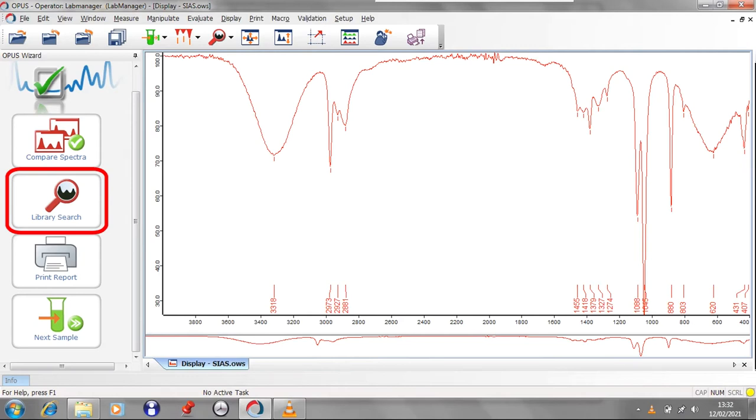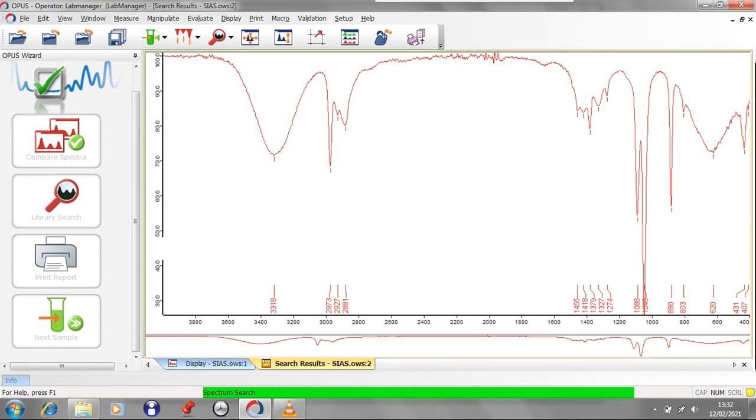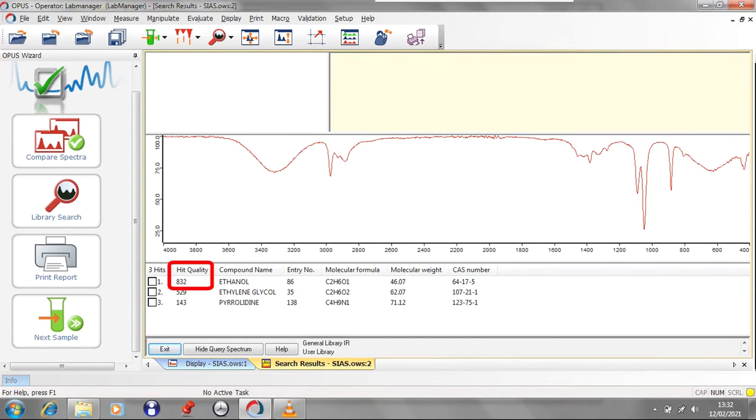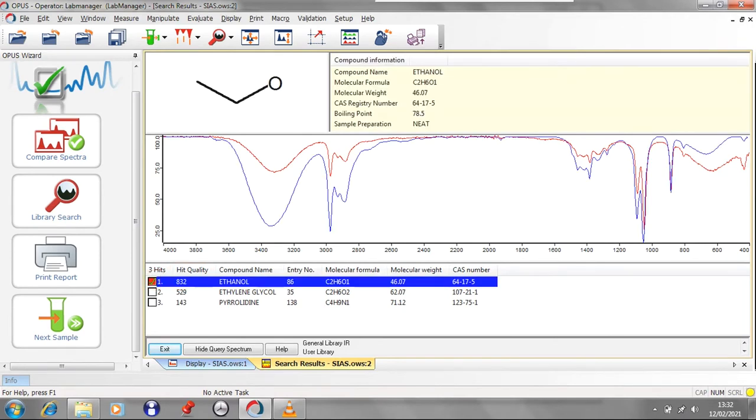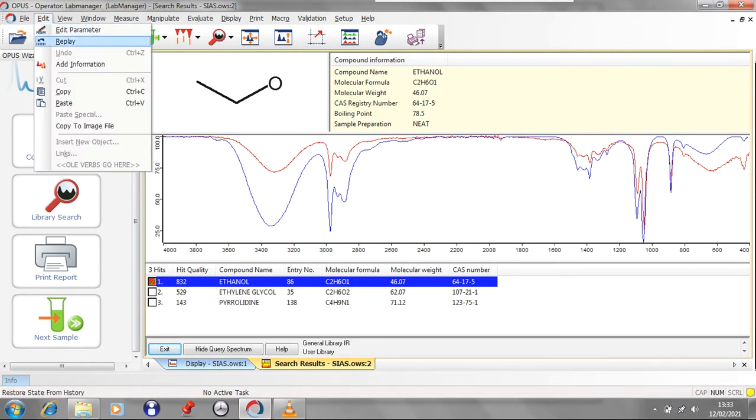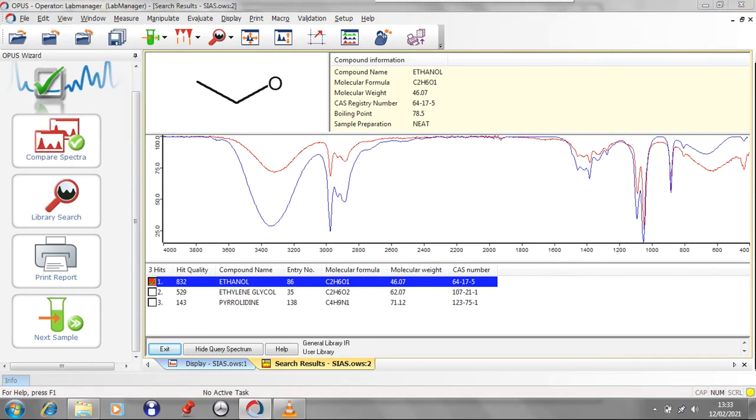Once you have your spectrum, click on the Library Search icon on the left of the screen. This will automatically compare your spectrum to those held in the program's library of compounds and give you a number out of a thousand for hit quality - in other words, how well it matches to the spectrum within the library for that compound. Click on the checkmark and it will bring up the spectrum from the library to compare with your own.